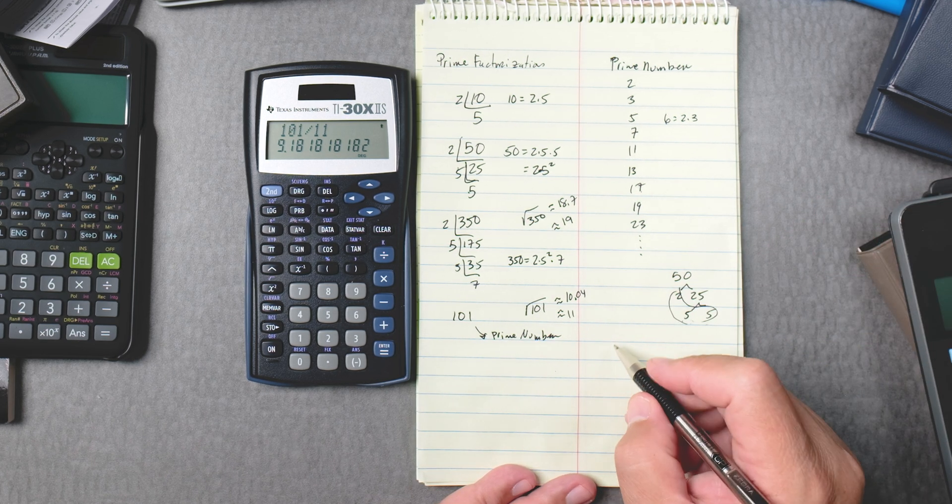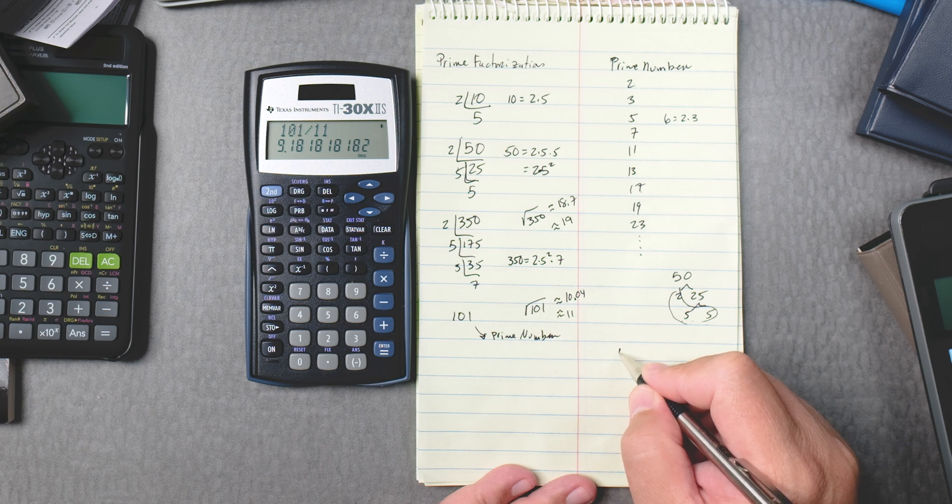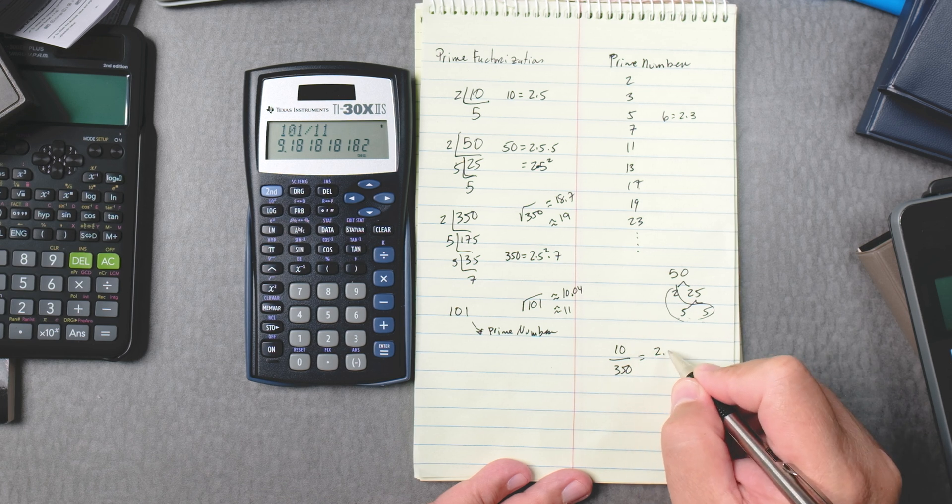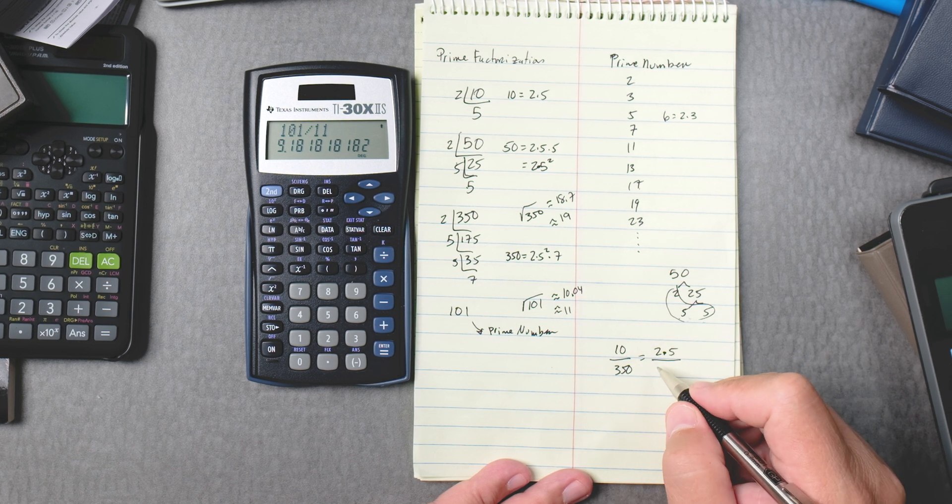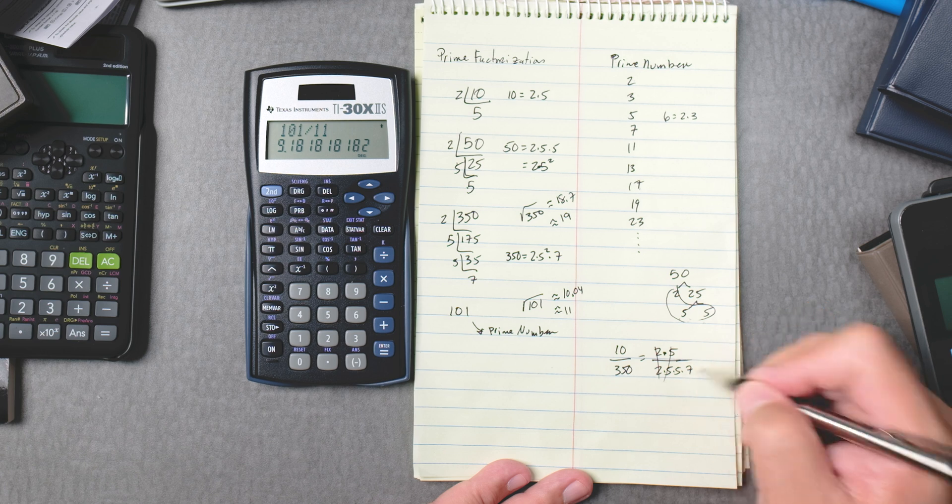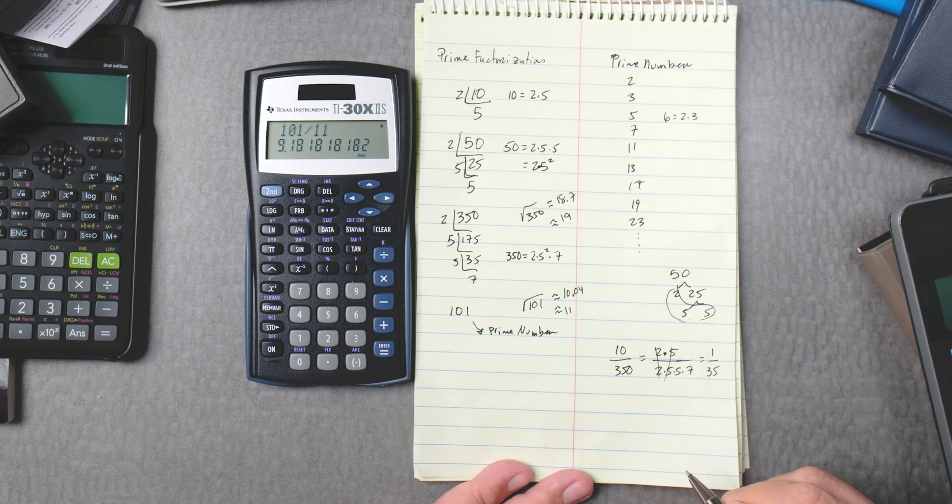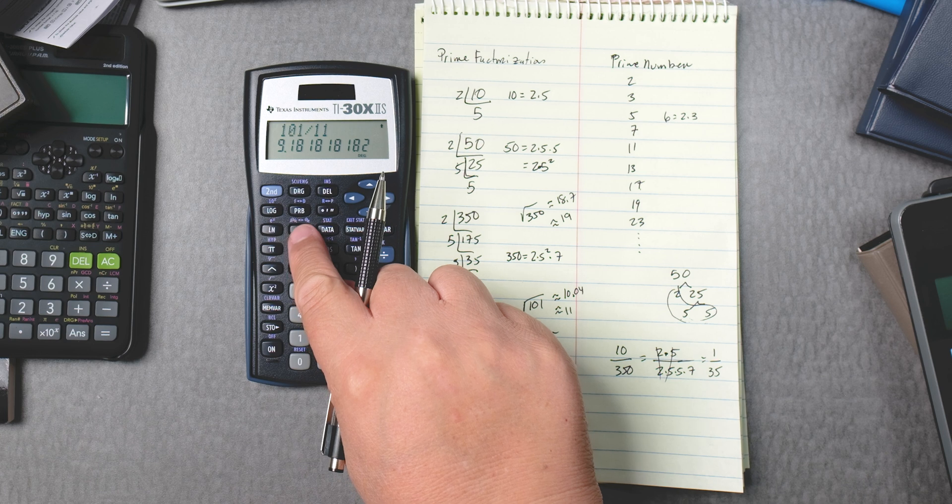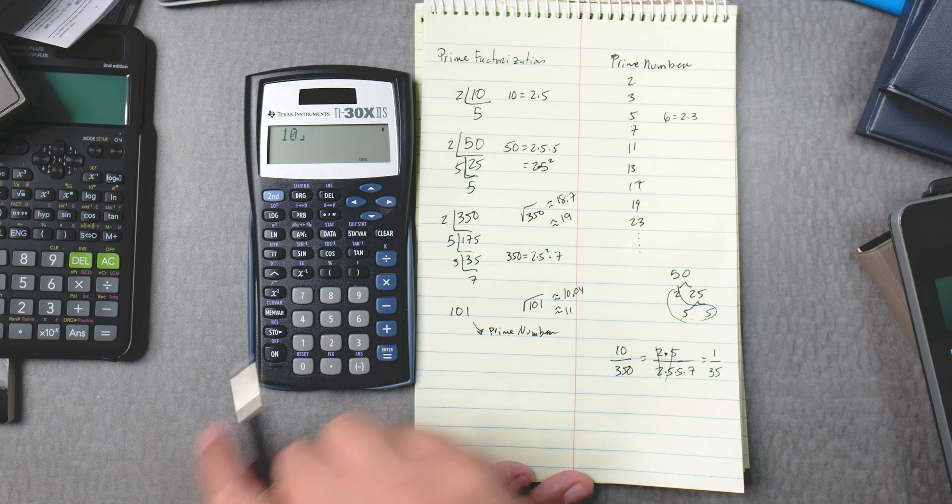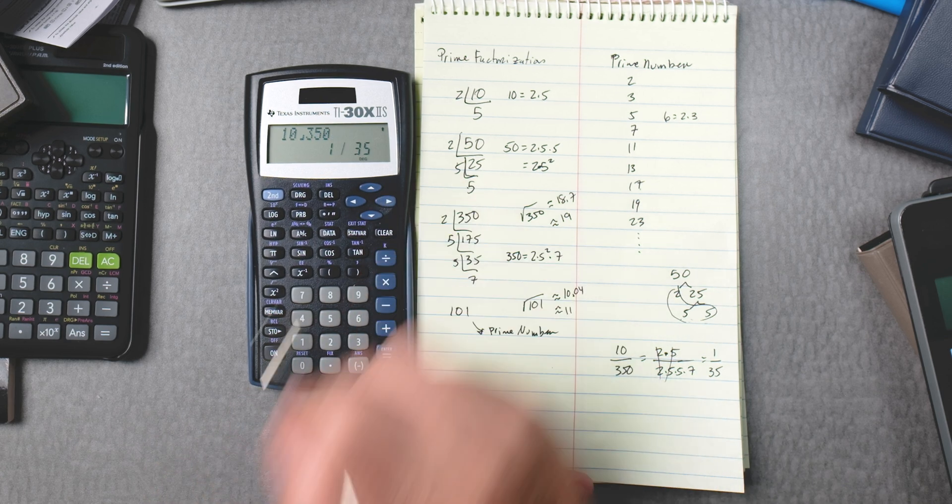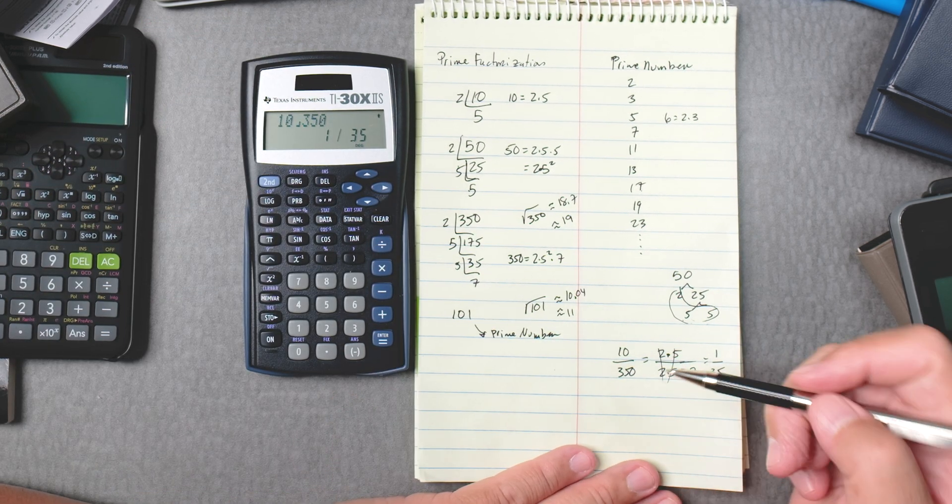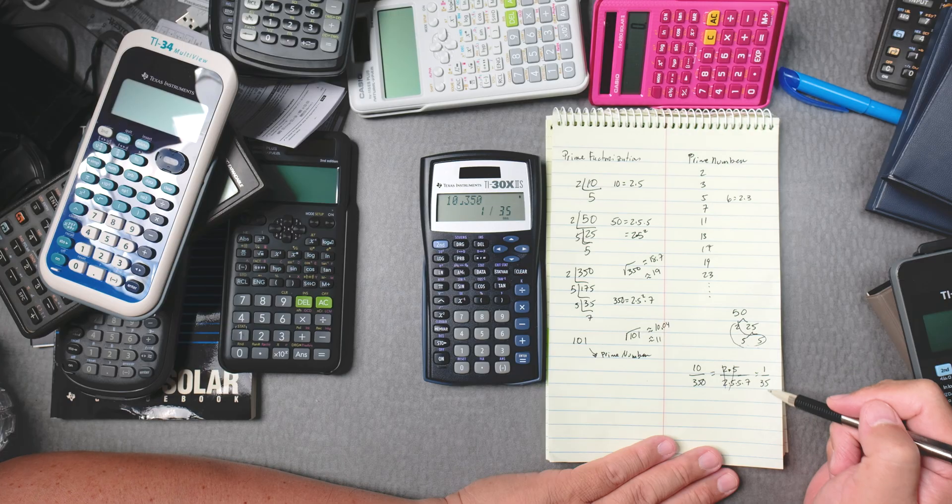Why would you want to use prime factorizations? Let's say you had something like 10 over 350. What you can do is you can use prime factorization on 10 and then 350 is also 2 times 5 times 5 times 7, right? These cancel, these cancel. That leaves you with 1 over 35. And if you have the ABC button, you can do 10 ABC 350 equals, and then you get 1 divided by 35. It reduces. The calculator does that automatically. You can do it with prime factorizations and then reduce it that way.